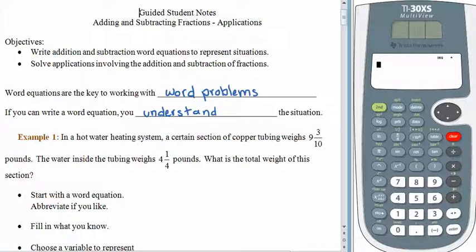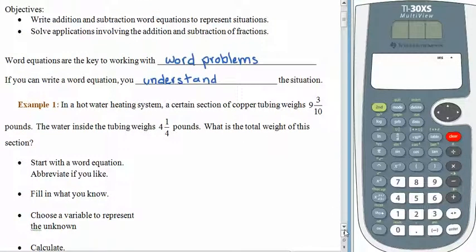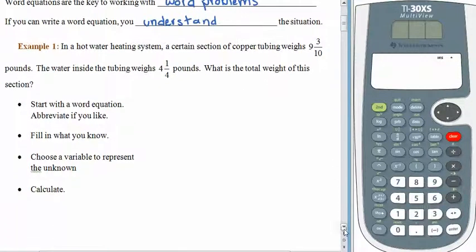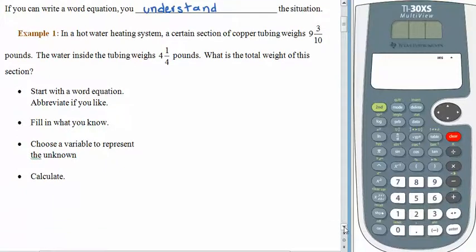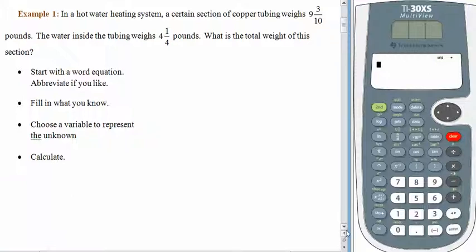You have your guided notes and I have mine. In a hot water heating system, a certain section of copper tubing weighs nine and three tenths pounds. The water inside the tubing weighs four and a quarter pounds. We would like to know the total weight of this section. This may sound familiar — we had something very similar several lessons ago. So let's start with the word equation and see if we can figure out what's happening here.